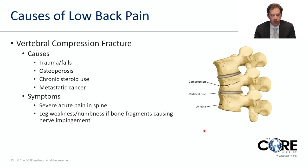Another common cause of back pain, usually in the acute to subacute range, are fractures. Common causes include trauma related to falls, chronic steroid use, cancer, and osteoporosis. The pain is usually fairly acute and can be very severe. If there is fragmentation of the bones related to the fracture, it can cause nerve impingement, leading to pain, weakness, and numbness in the legs.